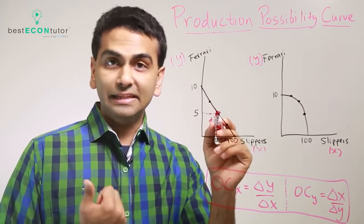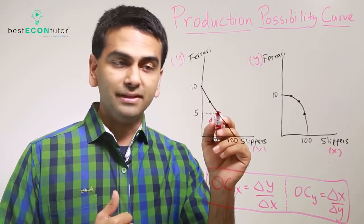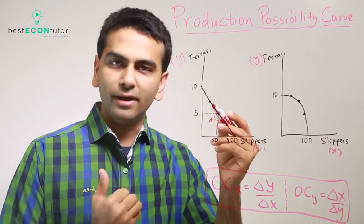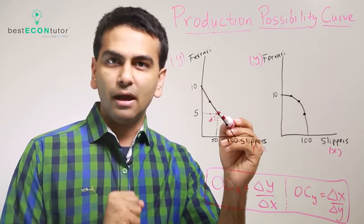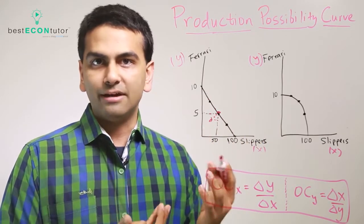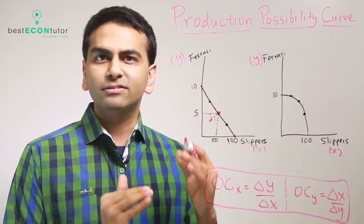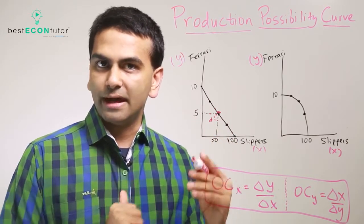Anything on the line is efficient, because what that means is to make any more of one good, if you wanted to make another pair of slippers, you're going to have to make fewer Ferraris. That's why there's that trade-off. That's why PPFs, PPCs, they always slope downwards because of the trade-off.